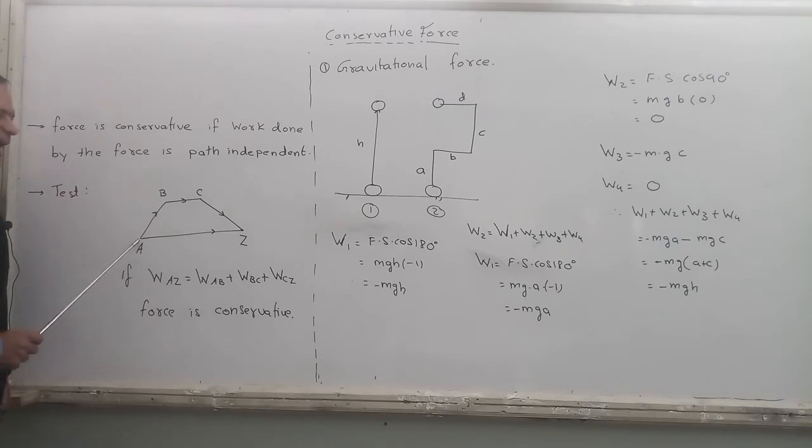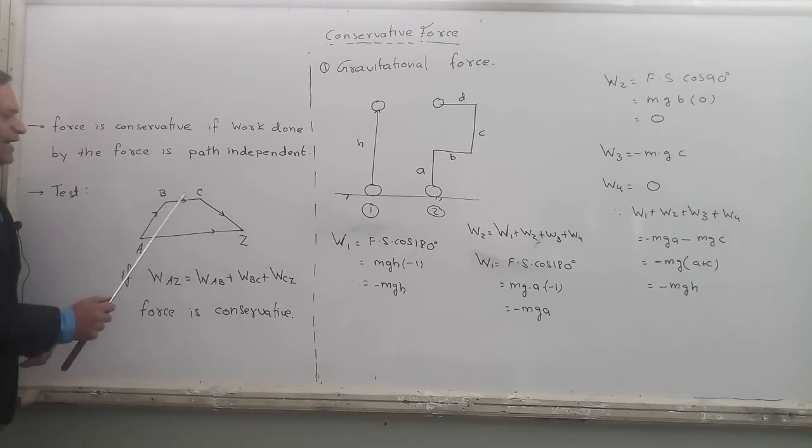See, this is point A and this is the final point Z. I will bring a body from A to Z through direct path, and then I will move the same body through an indirect path, that is from A to B then to C and then to Z. If the work done from this straight path A to Z is equal to the work done through this path, check the work done by this path, by this path, and by this path.